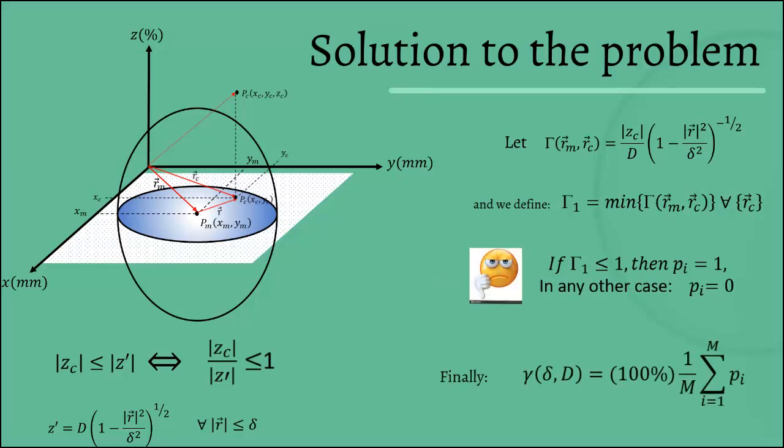Finally, we define gamma which depends on two parameters, the ratio of our circumference and the height of our revolution ellipsoid. And what we do is add all the positive points 1 and we divide it within the total number of detectors and finally we multiply by 100 and that's what we report as our gamma value.